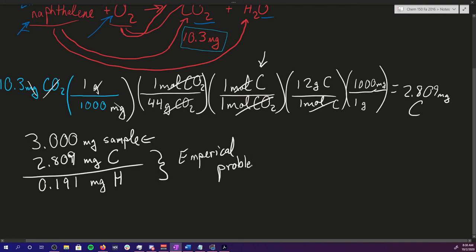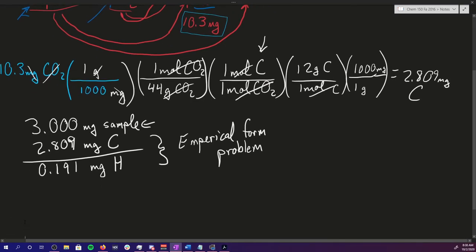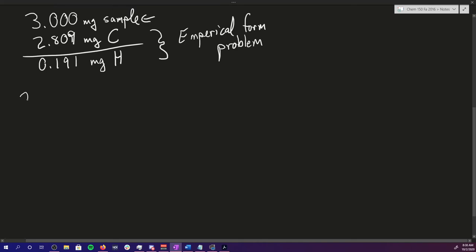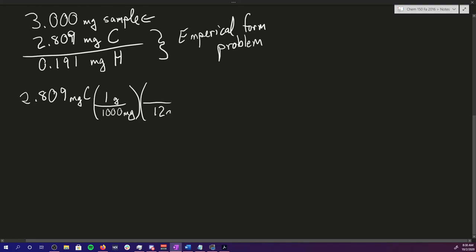For the empirical formula problem, we start with 2.809 milligrams of carbon. We don't like working in milligrams, so we convert to grams using our conversion factor. Then we ask how many moles of carbon this is, using the atomic mass from the periodic table. Calculating this gives us 2.341 × 10⁻⁴ moles of carbon.